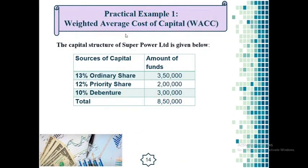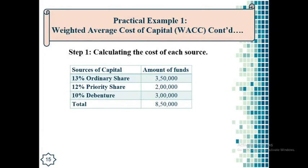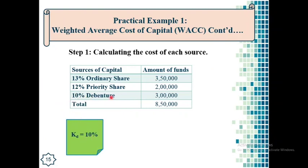Now we see the first practical example. The capital structure of Superpower Limited is given: 13% ordinary share of Taka 3,50,000; 12% preference share of Taka 2,00,000; and 10% debenture of Taka 3,00,000. Total capital is Taka 8,50,000. We have to calculate the weighted average cost of capital. Following the three steps: the cost of debt is 10%, as given. There is no tax rate, so 10% is our ultimate cost of debt.